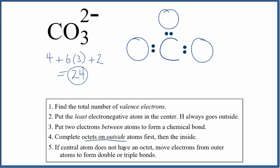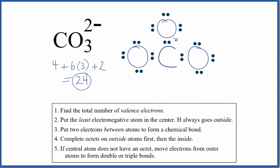Next, we'll complete the octets on the outside atoms, on the oxygens. That'll look like this. So at this point, we have a total of 24 valence electrons we've used.